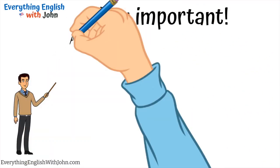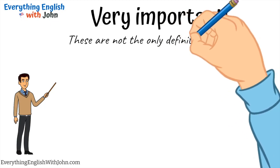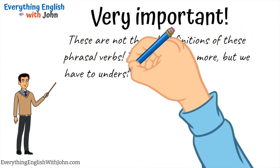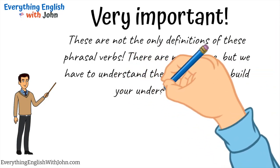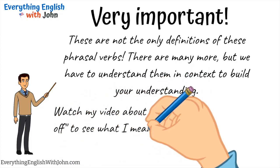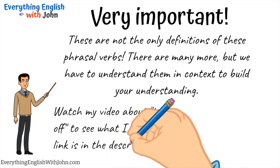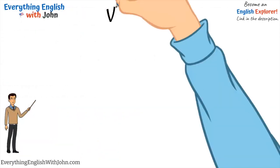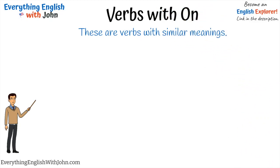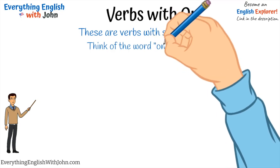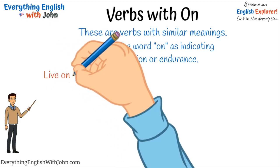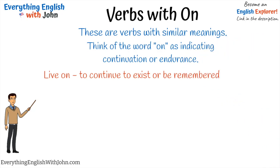Very important: these are not the only definitions of these phrasal verbs. There are many more, but we have to understand them in context to build your understanding. Verbs with on — these are verbs with similar meanings. Think of the word 'on' as indicating continuation or endurance.